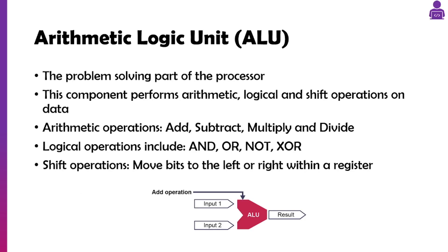The ALU is a little bit like a calculator — it solves problems. It's probably more accurate to say the ALU is the brain of the CPU. It does arithmetic operations and logical operations: adding, subtracting, multiplying, and dividing. It handles logical controls like if statements using AND, OR, NOT, and XOR, and it can also move bits to the left or right within a register.